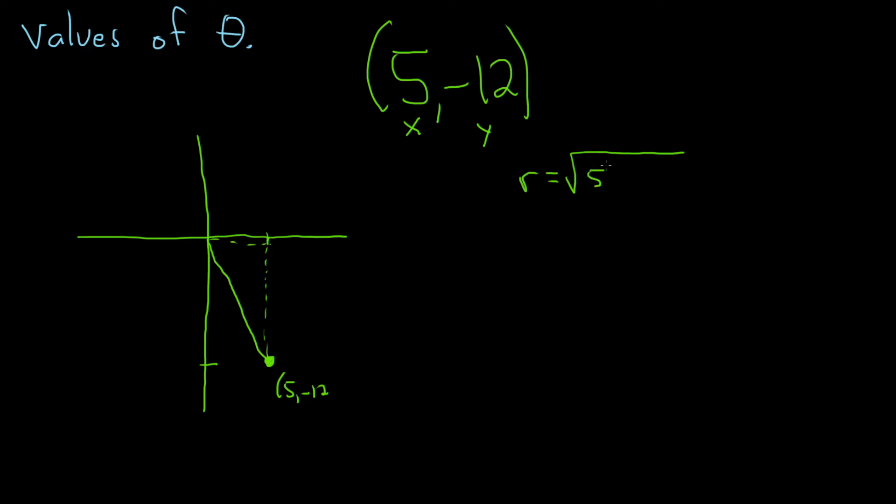So in this case it would be 5 squared plus negative 12 squared. So that will be the square root of 25 plus 144. So that's 169. So that's going to be 13. So r is 13.